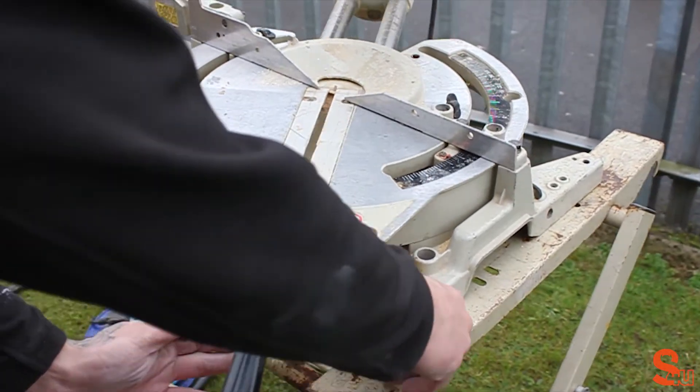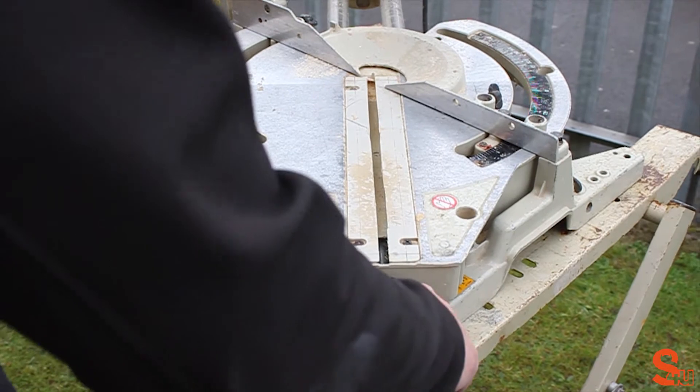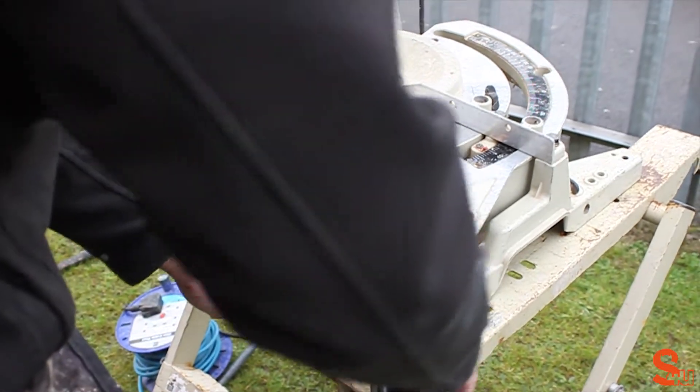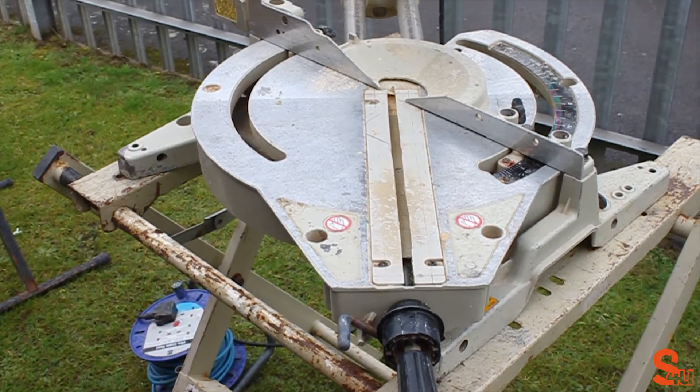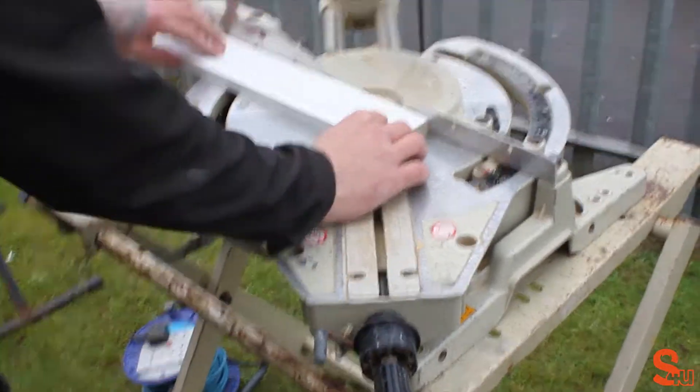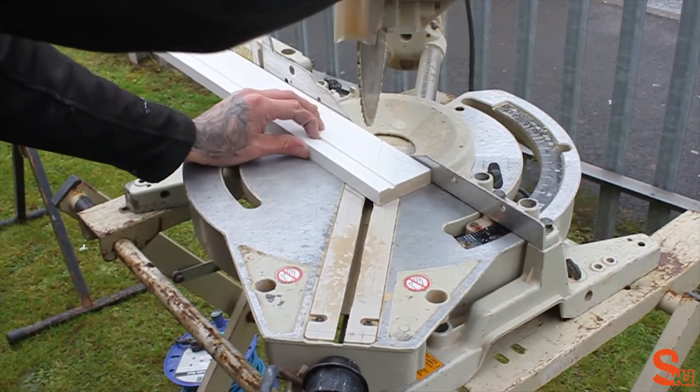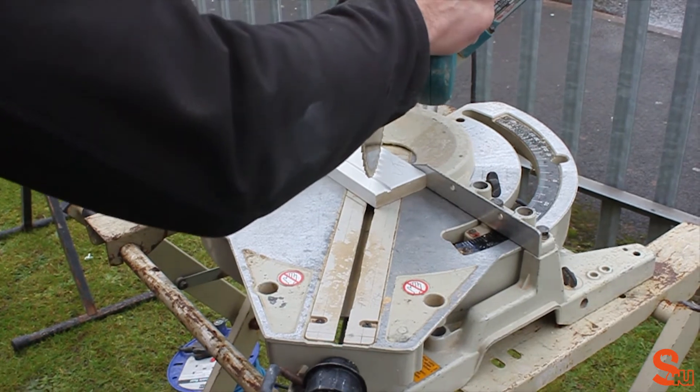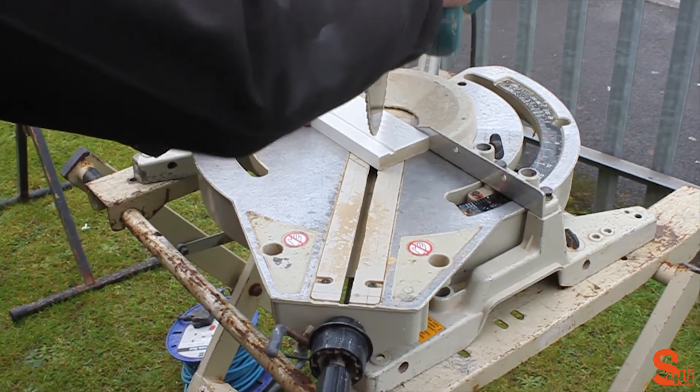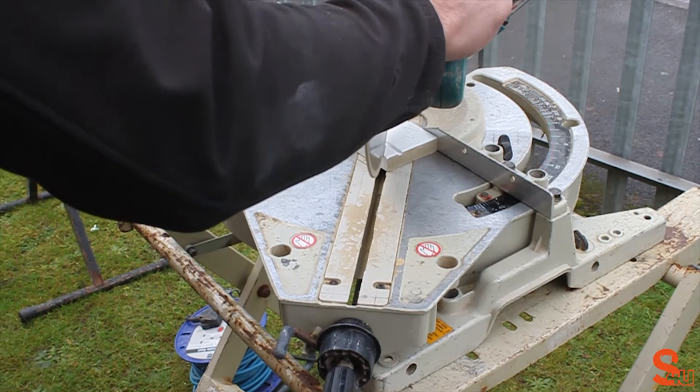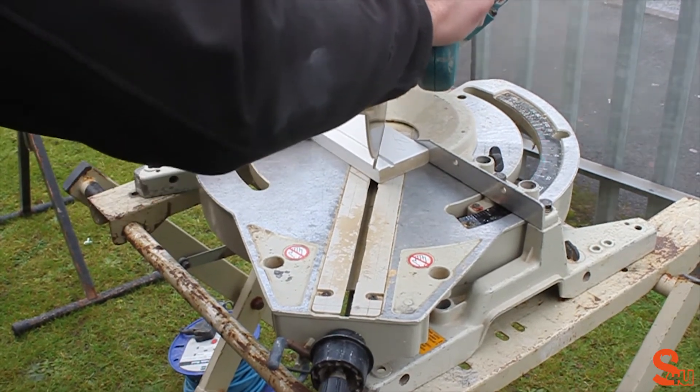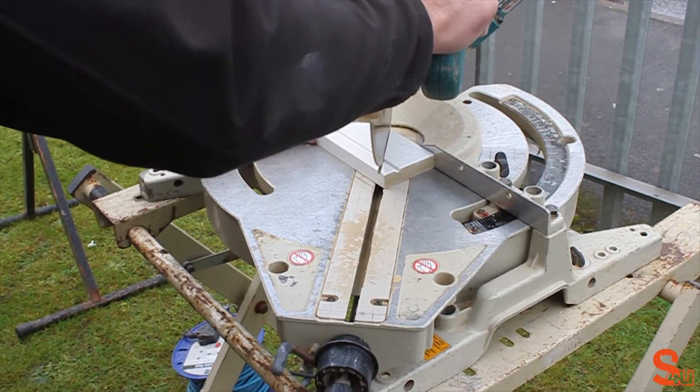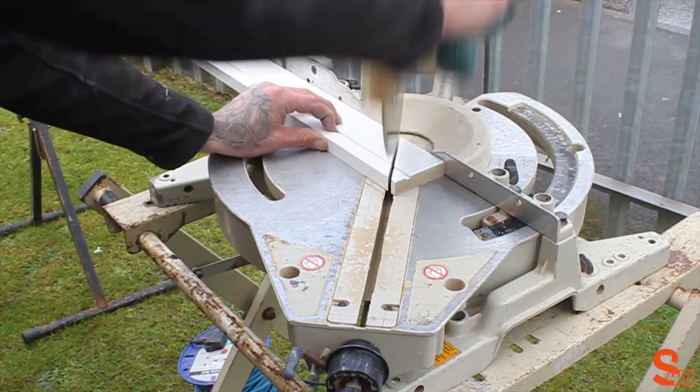Take it out to the miter saw, set it to the right angle. It's the opposite 45 degrees this time. So that piece is done as well, and we're on to the final piece.